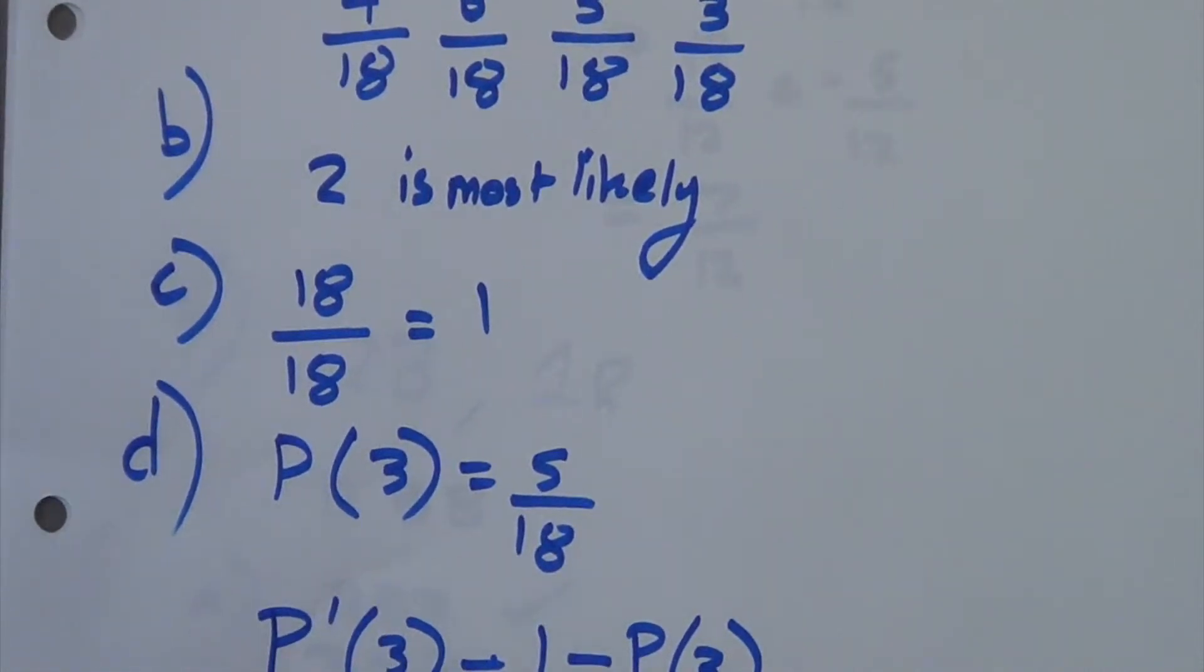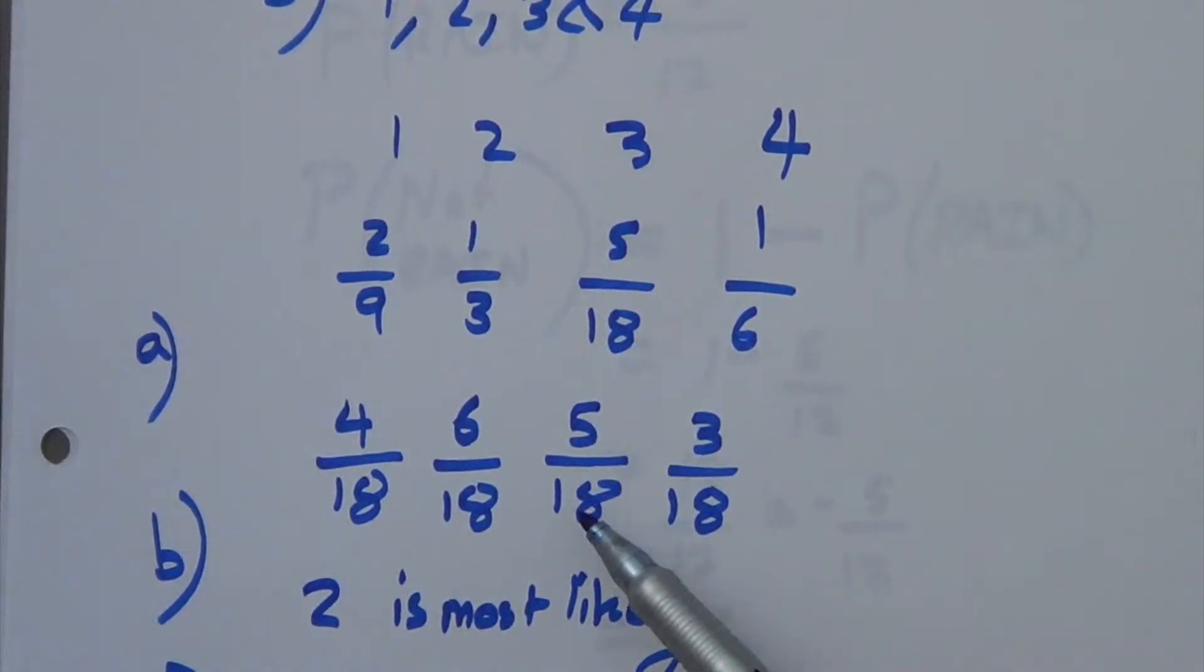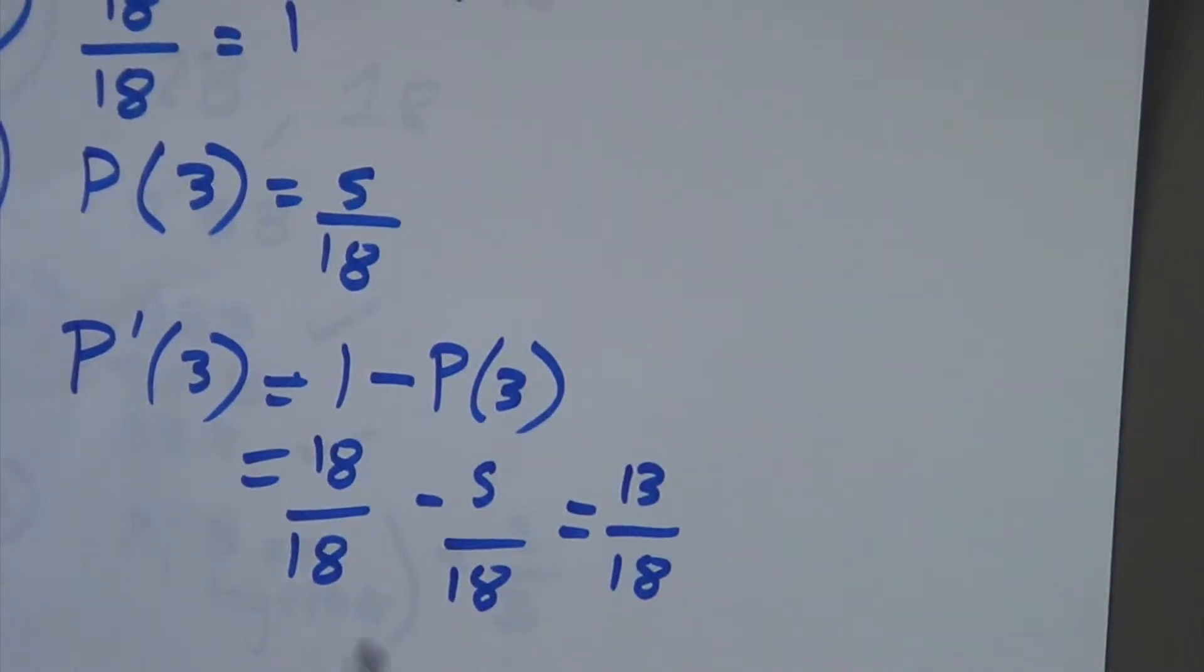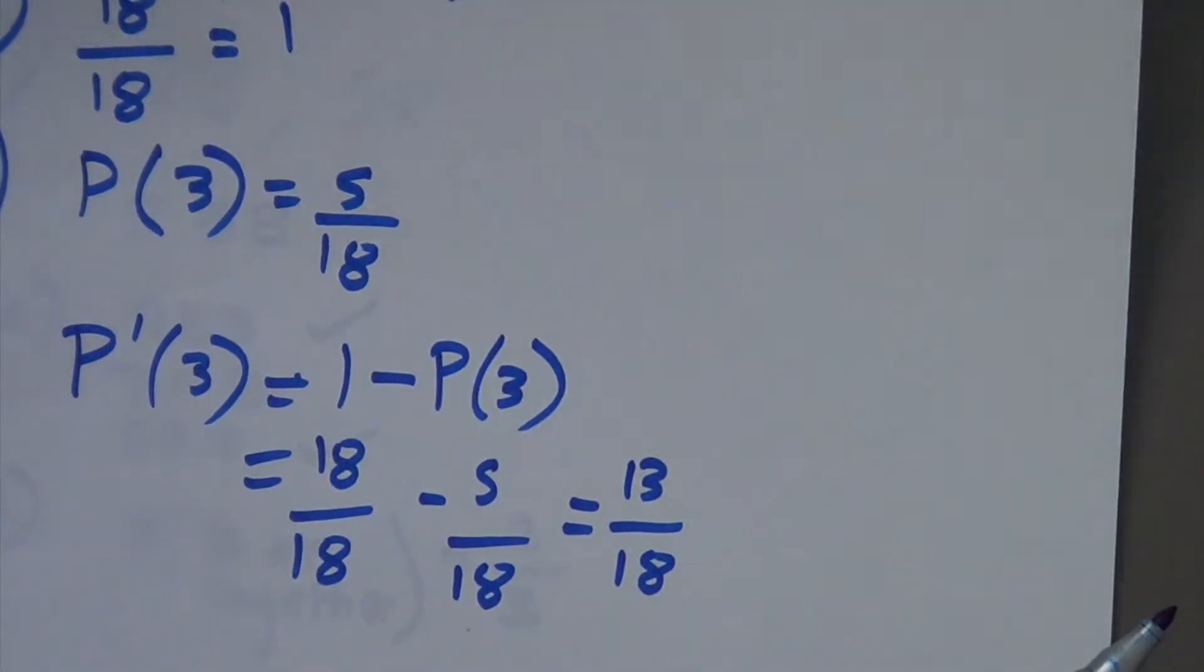Right, next question. It says, what is the probability that it does not land on phase 3? So, if we look at phase 3, the probability is 5 over 18. Now, you can do this two ways. You can actually add up the probabilities of the other phases, which is 4 over 18 plus 6 over 18 plus 3. So, we could add up 4 plus 6 plus 3 should give us 13 over 18. However, the method I've done here is basically I've said to find the probability of not 3, I'm going to say 1 minus the probability of 3, which is 18 over 18, which I rewrite as 1. Or, I've rewritten from 1 minus 5 over 18 gives me 13 over 18. So, I get the same answer for both methods.